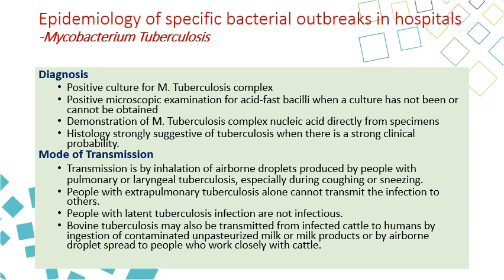Mode of transmission is by airborne transmission from open pulmonary TB or laryngeal TB. During coughing and sneezing, they expel TB bacilli in the air, which is then inhaled by exposed people. People with extra-pulmonary TB are not infectious and cannot transmit infection to others. People with latent TB are also not infectious — they don't have symptoms but are TB positive. Bovine TB may also be transmitted from infected cattle to humans by ingestion of contaminated unpasteurized milk or milk products, or rarely by airborne droplets among people who work closely with cattle like farmers and veterinarians.